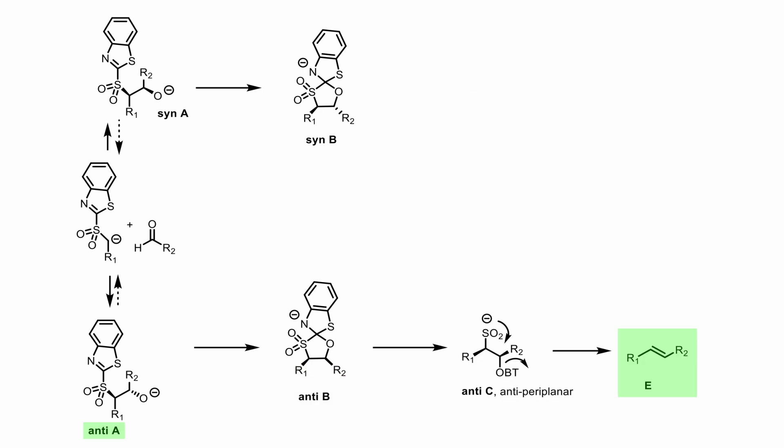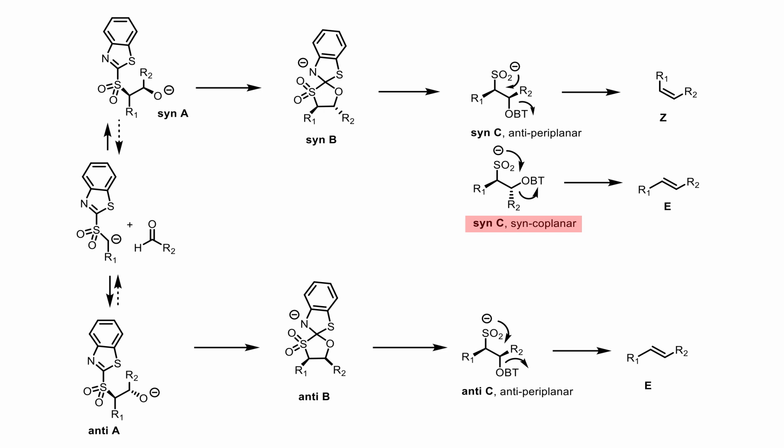Both experimental evidence and theoretical calculations show that while anti-A leads to the E olefin via the Smiles rearrangement followed by the expected anti-periplanar fragmentation, the syn-C diastereomer undergoes a syn-coplanar elimination, meaning it prefers a transition state in which the SO2 group and the hydroxybenzothiazole leaving group are coplanar but leave from the same face of the molecule — a very unusual situation for 1,2-elimination reactions. This also leads to preferential E olefin formation, and indeed E olefin formation is typically favored when dealing with benzylic sulfones and especially aromatic aldehydes, meaning reactions in which the first step is reversible.